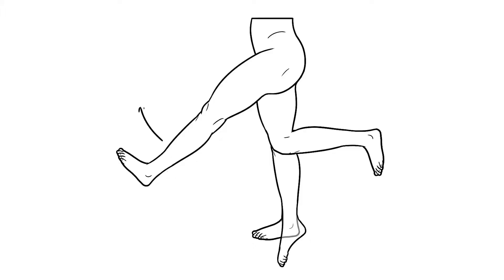Generally the upper nerve roots control anterior movements of the limb whilst the lower nerve roots control posterior movements. So hip flexion is part of the L2 and L3 myotomes. Knee extension is controlled by L3 and L4, and ankle extension is part of the L4 and L5 myotomes.